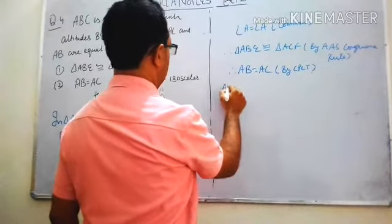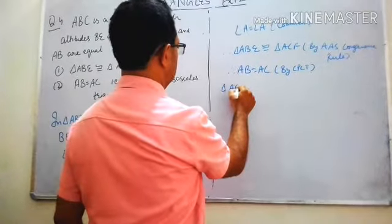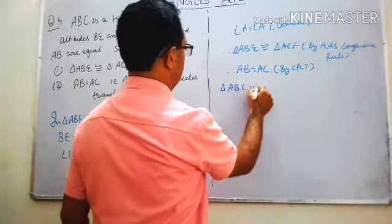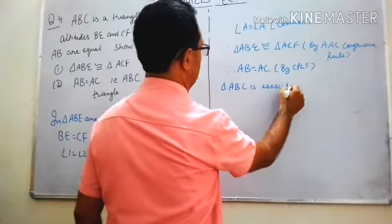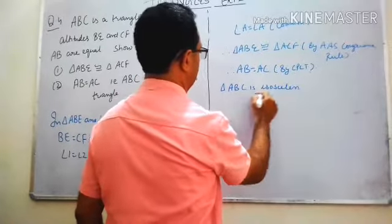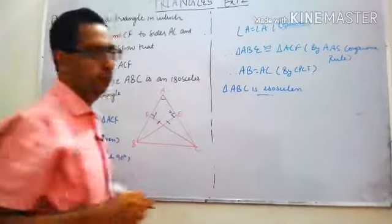Therefore AB is equal to AC by CPCT, and therefore triangle ABC is isosceles.